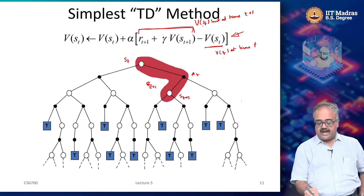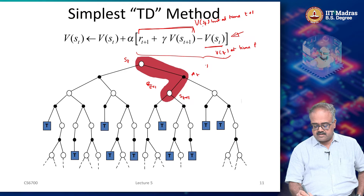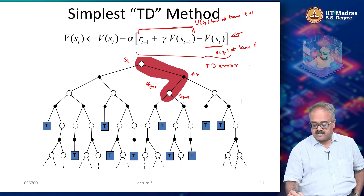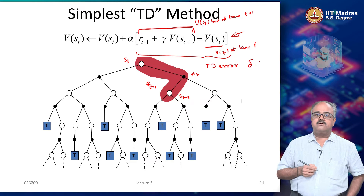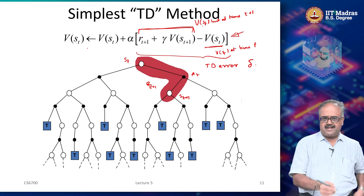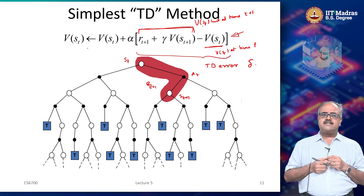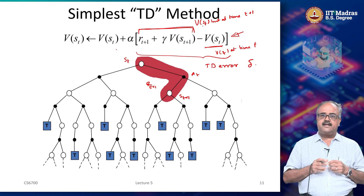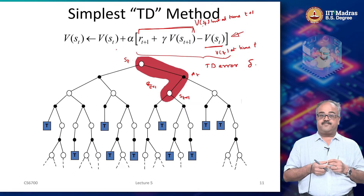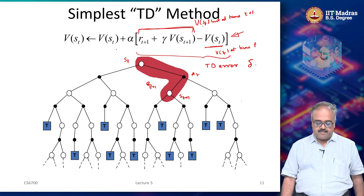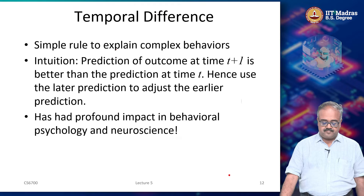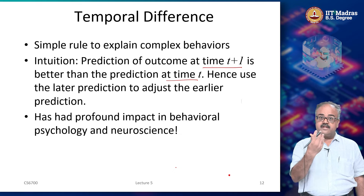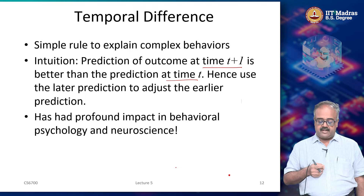I take the difference, and that is called the TD error, sometimes denoted by the symbol delta. I take the TD error delta, and like we normally do with stochastic updating rules, I move a small step alpha in the direction of this TD error so as to correct my estimate of V(S_t). The prediction at time t+1 is better than the prediction at time t; hence I use the difference to correct the prediction error.